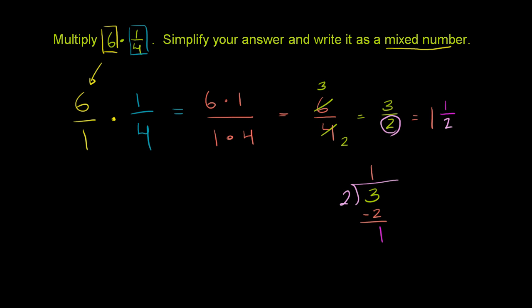Alternatively, we could simplify at an earlier stage. We could divide what's in the numerator by 2 to get 3, and divide what's in the denominator by 2 to get 2. Then 3 times 1 is 3, and 1 times 2 is 2, giving us 3/2. Then use the same process to convert 3/2 to 1 and 1/2.